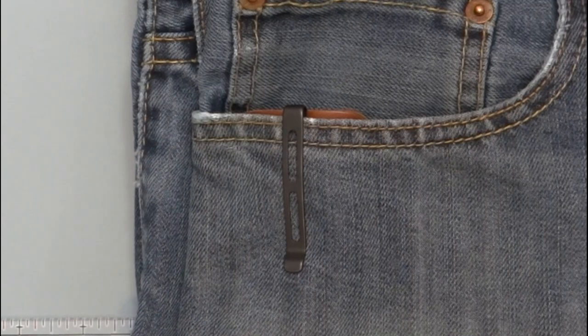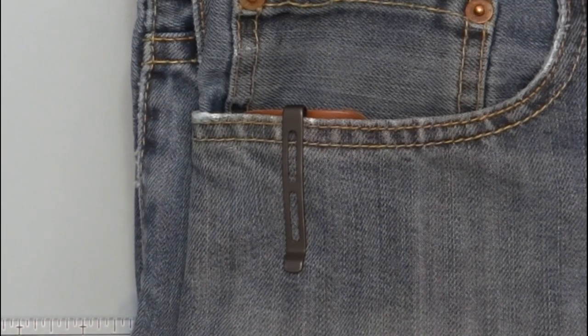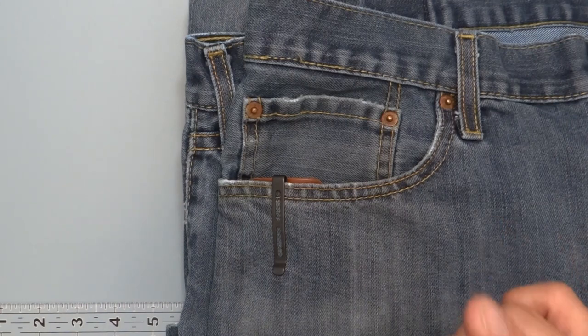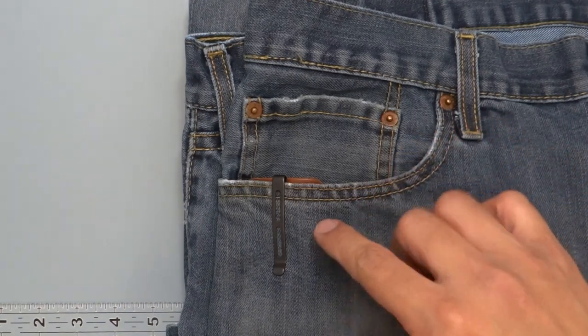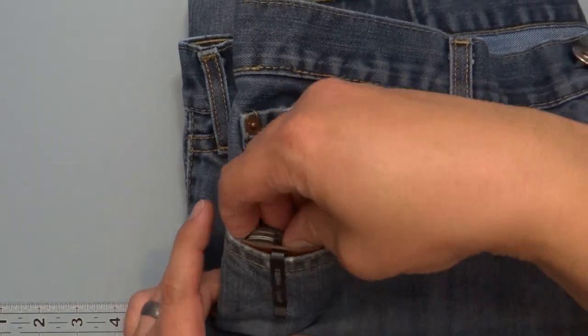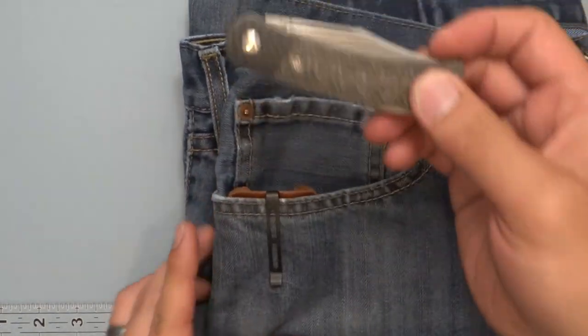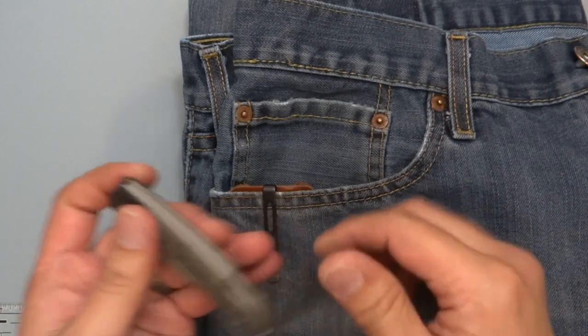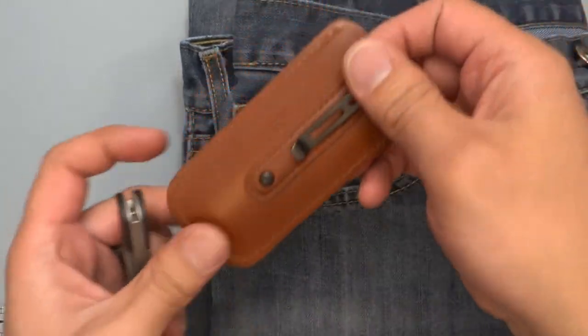So this is going to be the way that you can carry it if you'd like. This is the model number C914DS-2. So that's what this looks like if you're going to be using the sheath. That's going to be another way you can carry it or you could just carry it roving in your pocket. But this is the sheath that comes with it.